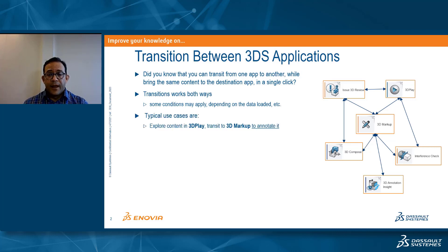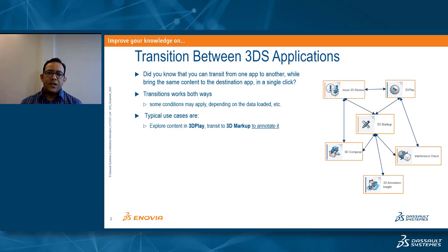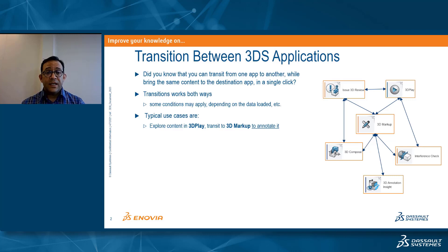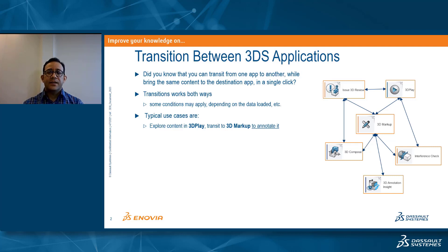Now why do we want to do this? The idea is that I am exploring certain content in 3Dplay but I want to annotate this content. This content cannot be annotated in 3Dplay, which is more of a read-only app, but I want to capture it, annotate it, and express concerns I have on this 3D. The way to do this is to take the content and translate it into 3Dmarkup without losing what we have done in 3Dplay — in one click using the compass I can translate to 3Dmarkup and do more.